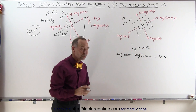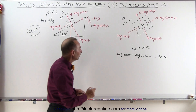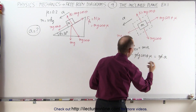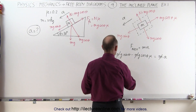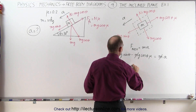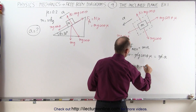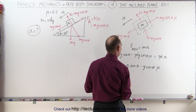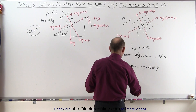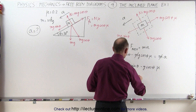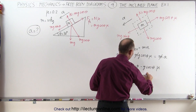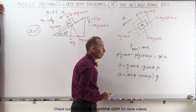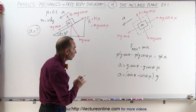Right away you realize that all terms have an m in it, so the m cancels out. Turning the equation around, we have a equals g sine theta minus g cosine theta times mu. Factoring out g, we have a equals g times the quantity (sine theta minus cosine theta times mu).